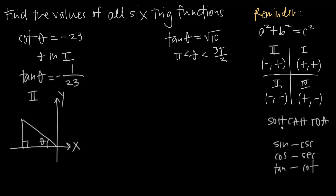Using SOHCAHTOA — sine equals opposite over hypotenuse, cosine equals adjacent over hypotenuse, tangent equals opposite over adjacent — we look at tangent of theta equal to 1 over 23. The opposite side is 1 and the adjacent side is 23. Since we're in quadrant two, x values are negative and y values are positive. So 23 along the x-axis must be negative, and 1 along the y-axis stays positive. That's how we know the negative sign goes to the 23.